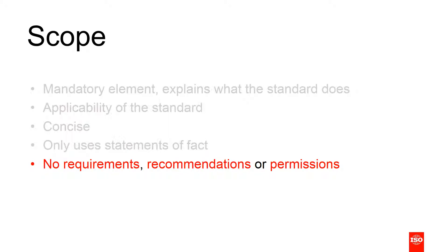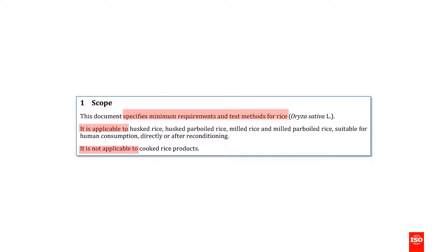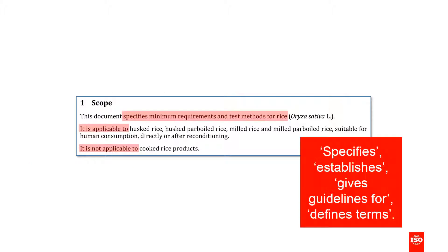To tell the user what the standard does, you can use words such as 'specifies,' 'establishes,' 'gives guidelines for,' or 'defines terms.' By using clear statements like these, the user can tell whether or not the standard will serve their needs.